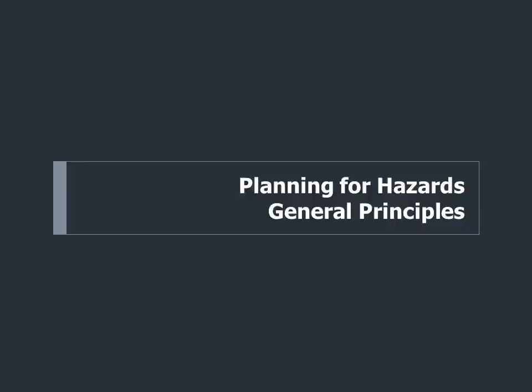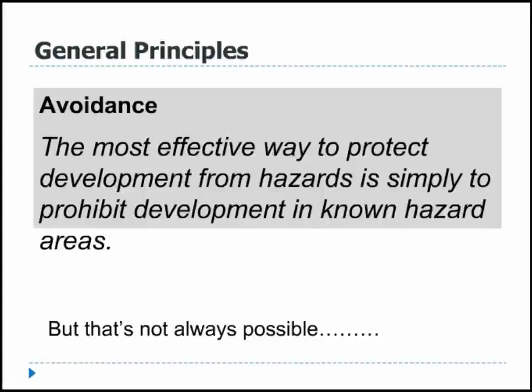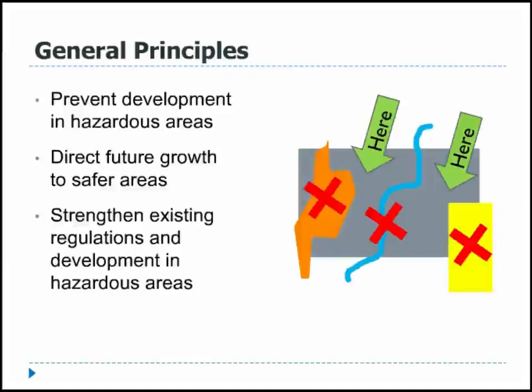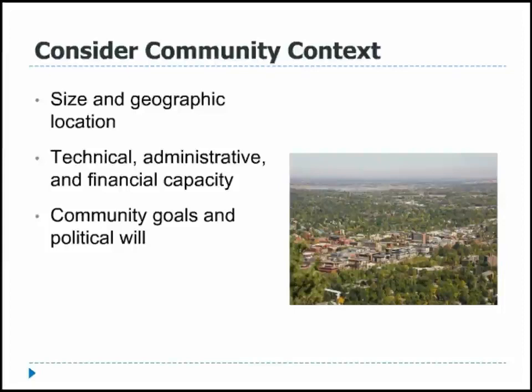Some of the general principles that went into the Planning for Hazards guide: obviously, we think a lot about hazard avoidance as one of the most effective ways to reduce risk and the damages and cost of disasters. But as planners and public officials, we're painfully aware that avoidance isn't always possible — whether because of historic development trends or political situations on the ground. So then we think about how to have resilient development in the context of hazards, preventing new development in hazardous areas, directing future growth to safer areas, and strengthening regulations to make developments more resilient.